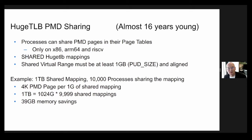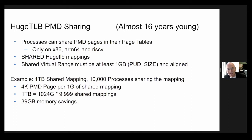As a very brief overview: processes can share PMD pages if they do huge TLB shared mappings. We actually share an entire PMD range, which means that's a PUD size sharing, which is usually one gigabyte on x86. One of the reasons for doing this is memory savings. One example our database group likes to give is a one terabyte shared mapping with 10,000 processes sharing it. If you do the math, it comes out to about 39 gig worth of memory savings if you do PMD sharing.